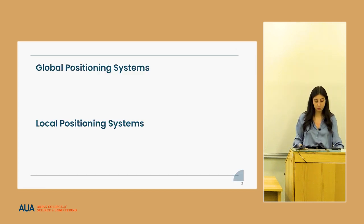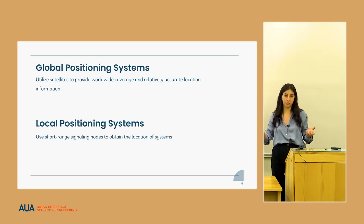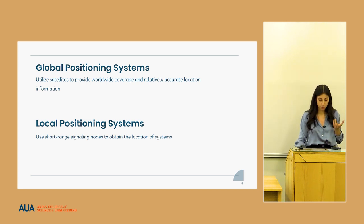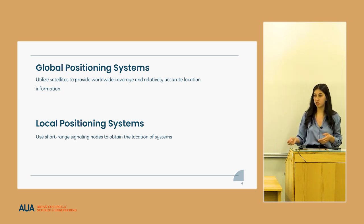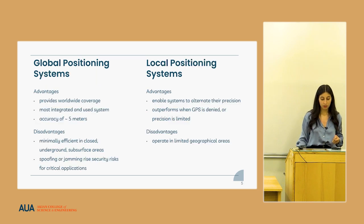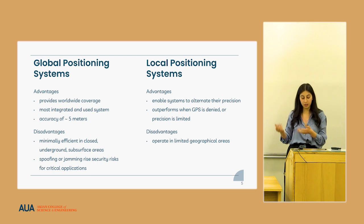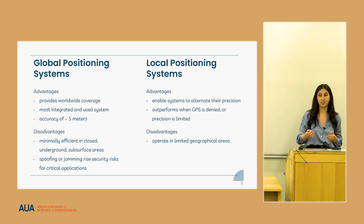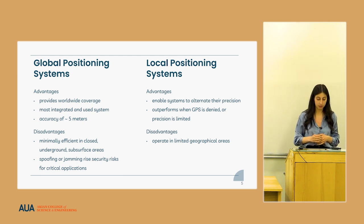The two main positioning systems are global positioning system and local positioning system. GPS provides worldwide coverage while local positioning systems provide coverage for a limited area and utilize short-range signaling nodes, in comparison to GPS which uses satellites. The accuracy for GPS is five meters, and it is the most integrated and widely used system, easy to use with most available devices.